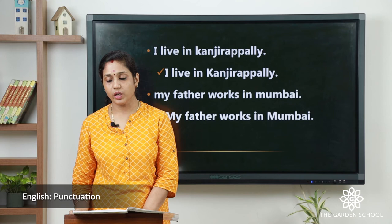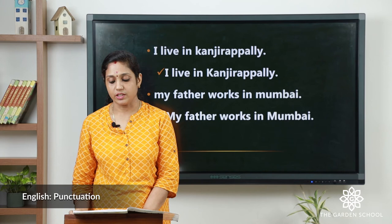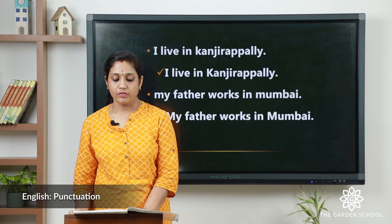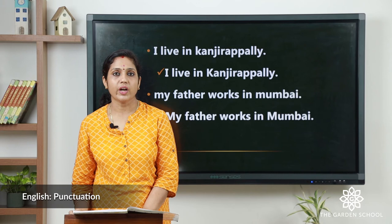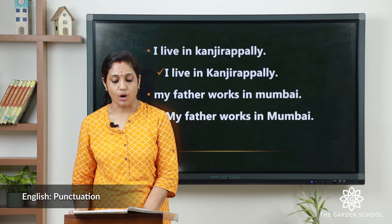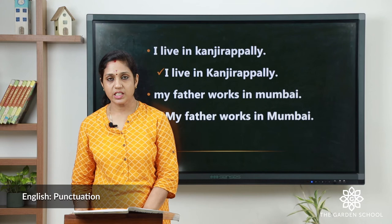Fourth: 'Ankit has a pet dog.' Write 'A' in capital letter: 'Ankit has a pet dog.' After 'dog,' put a full stop. Fifth question: 'My doll's name is Rinku.' Rinku is a proper noun, so 'R' — the first letter of Rinku — we need to write in capital letter. 'My' — 'M' capital letter: 'My doll's name is Rinku.' Full stop after Rinku.